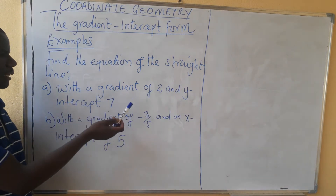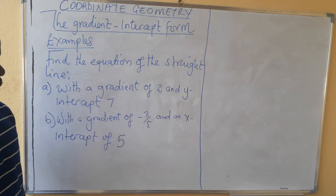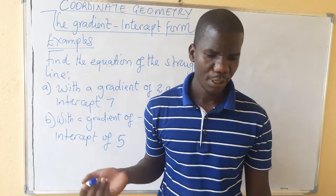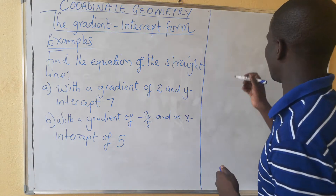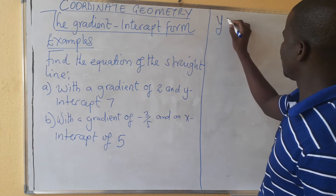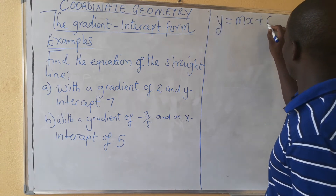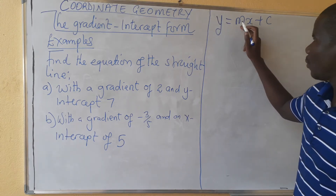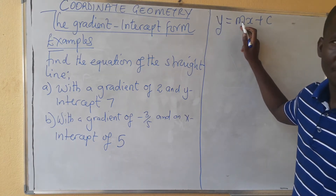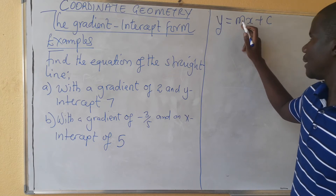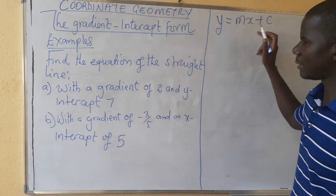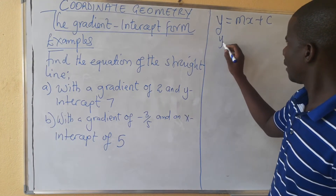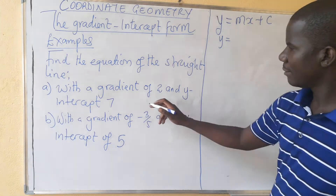We are looking at how to write an equation of a straight line when we are given the gradient and the y-intercept. If you remember from previous presentations, the equation is written in the form y = mx + c, where m is the gradient and c is the y-intercept.